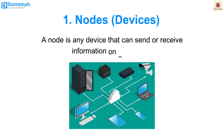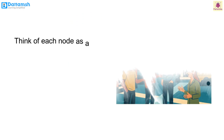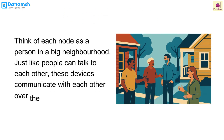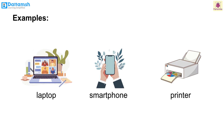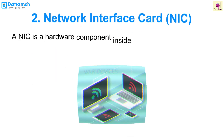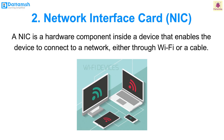Nodes and devices. A node is any device that can send or receive information on a network. Think of each node as a person in a big neighborhood — just like people can talk to each other, these devices communicate with each other over the network. Examples include laptops, smartphones, printers, etc.